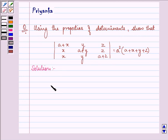Let's proceed with the solution. Now from the left hand side we'll proceed. Let D be equal to determinant a plus x, x, x, y, a plus y, y, z, z, a plus z.